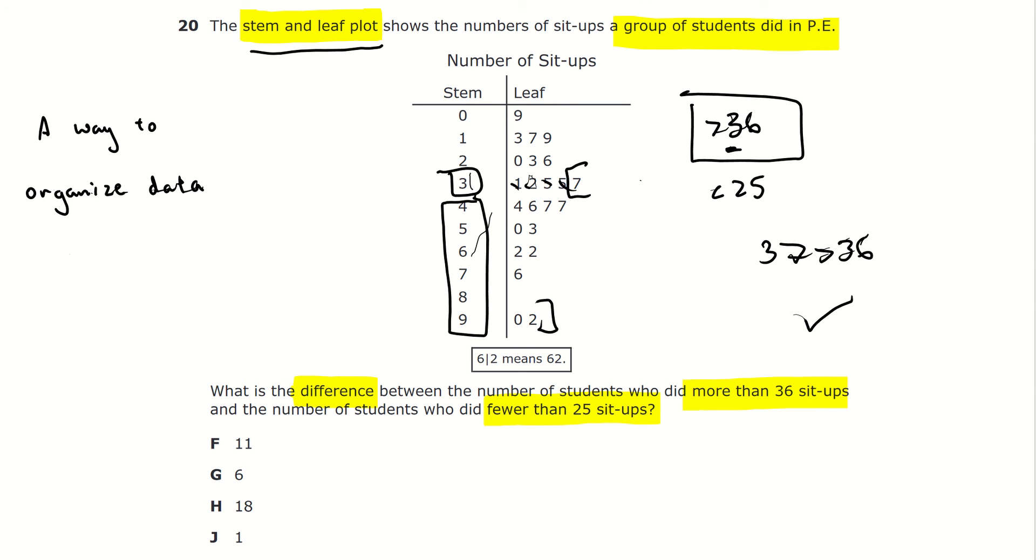Now, since we know what our start and end is, we can start to count. 1, 2, 3, 4, 5, 6, 7, 8, 9, 10, 11, 12. So, now, we know how many students did more than 36 sit-ups, which is 12.